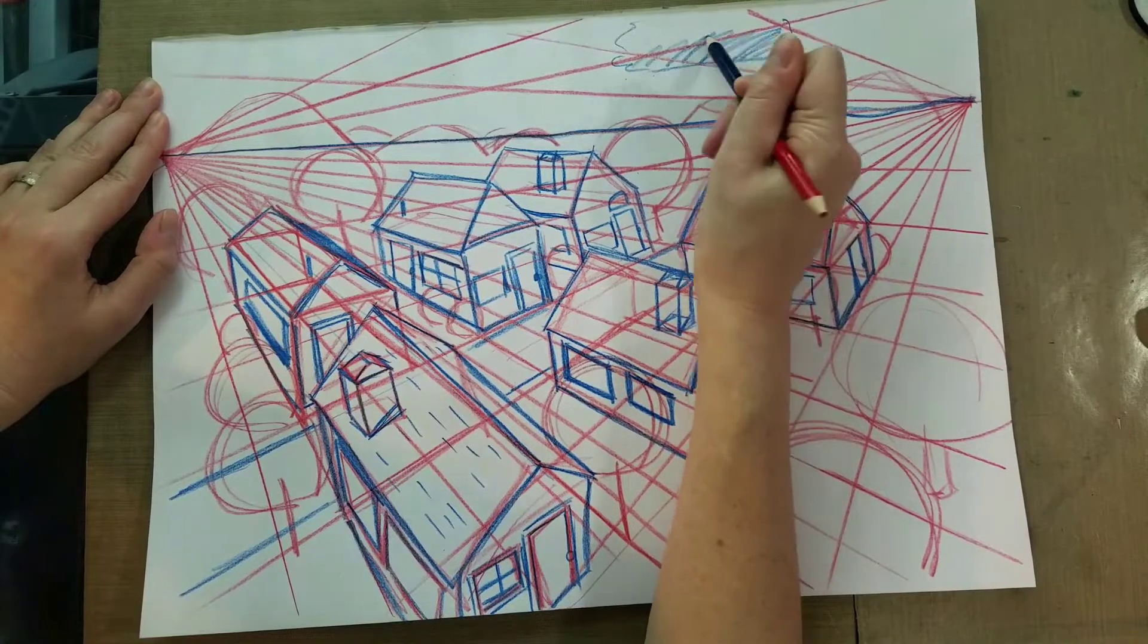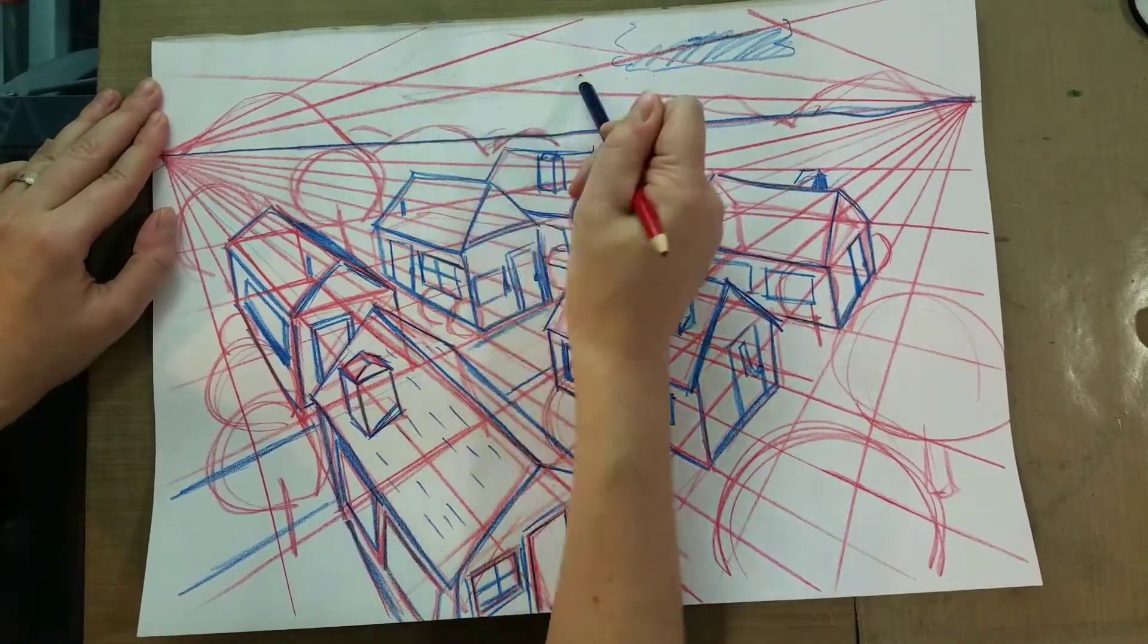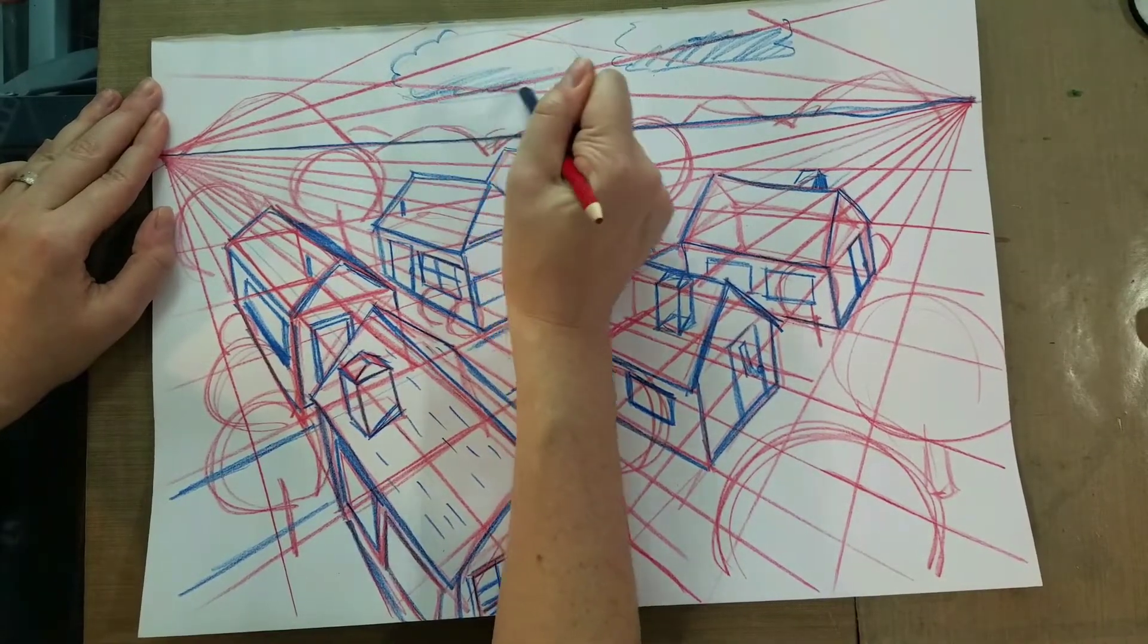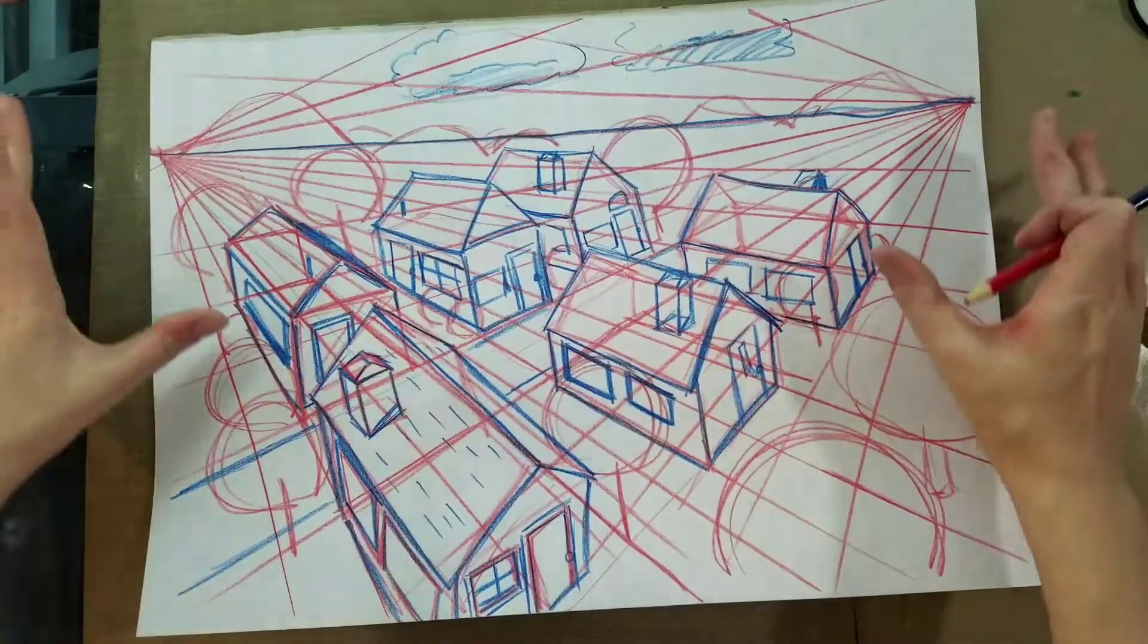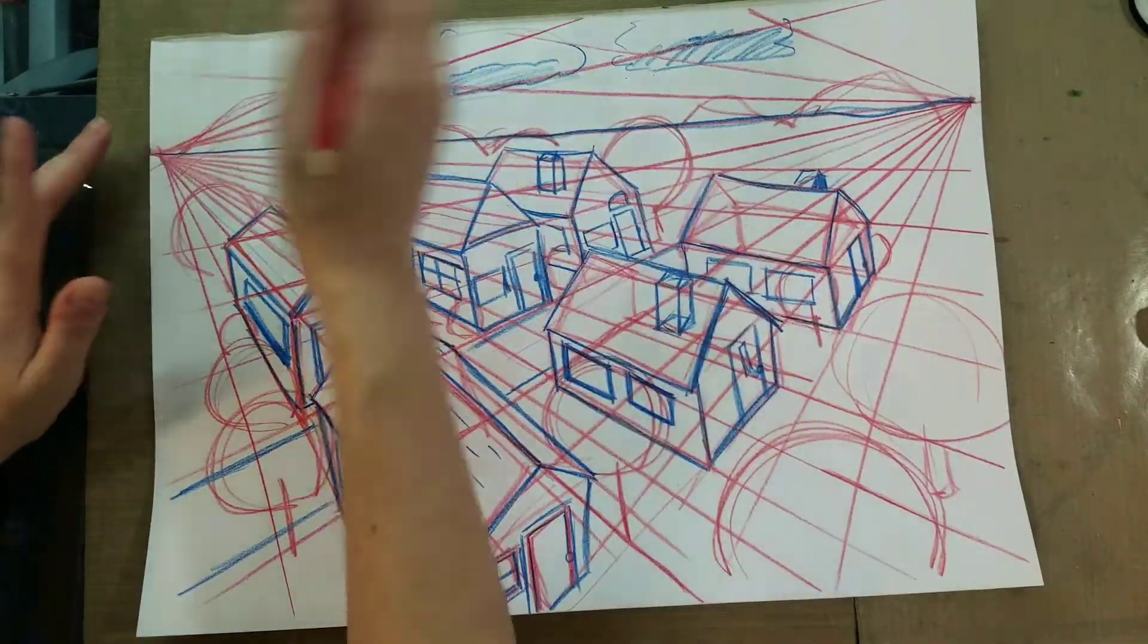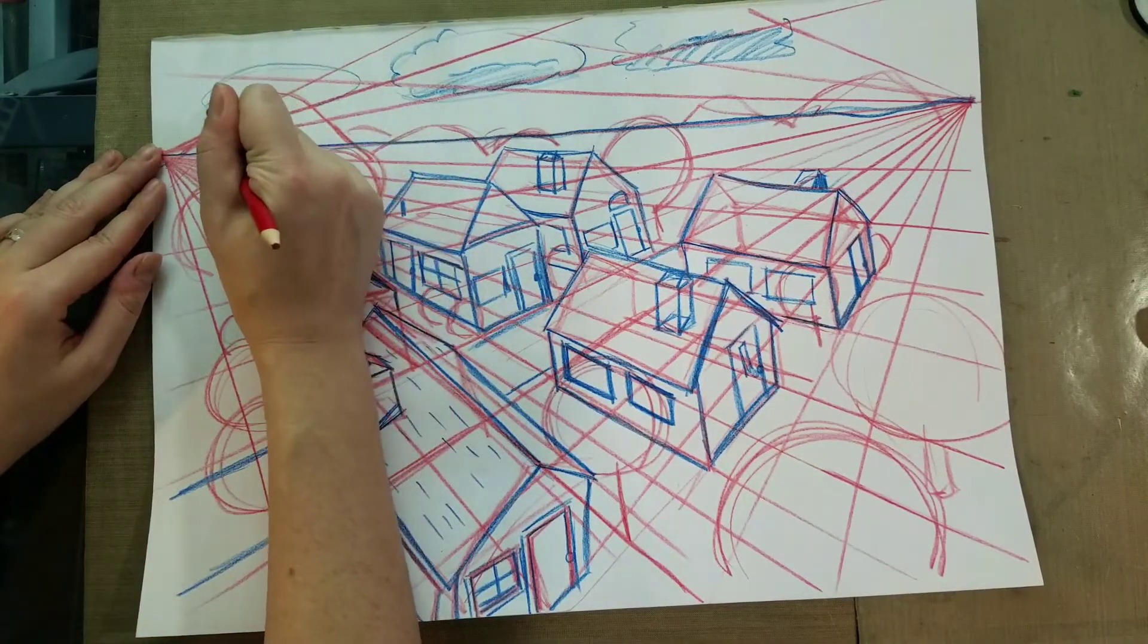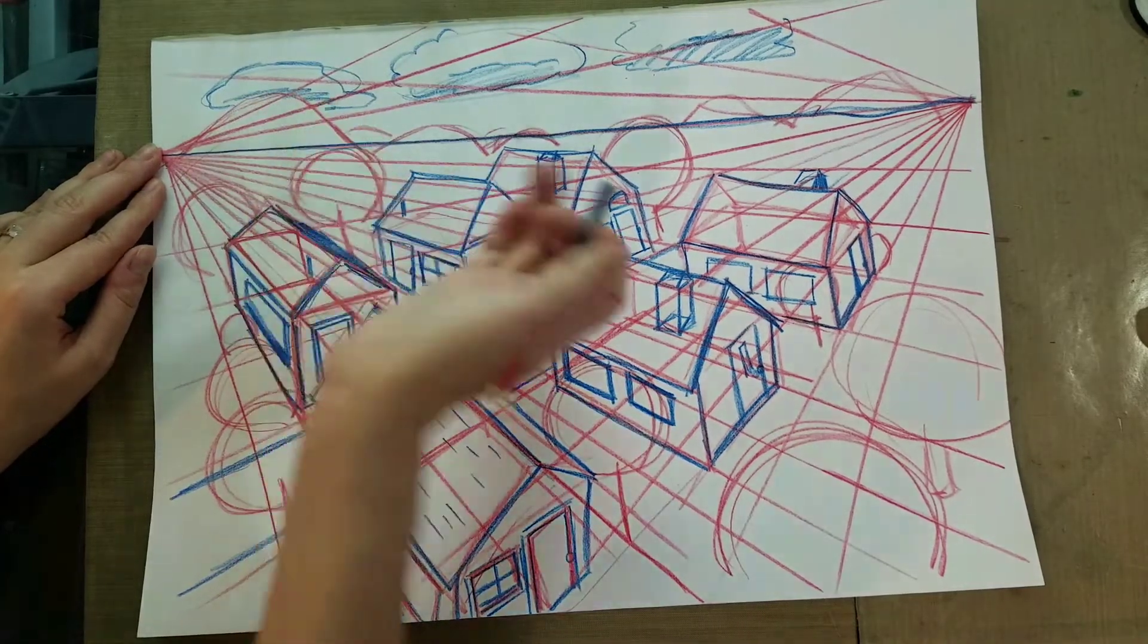Now, this would be the underside of the cloud because even clouds adhere to perspective, although you don't want them all going to the two vanishing points. You definitely want to mix things up a little bit. We'll have some overlap by having a big cloud behind one of our little mountains.